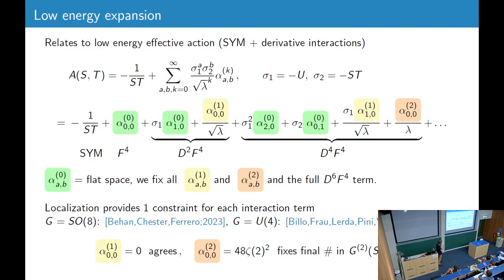Well, the alpha zeros are fixed by the flat space amplitude, and our result fixes also all the alpha ones and alpha twos. And combining with localization, we can also fix the full D^6 F^4 term. So localization provides one linear constraint for each of these interaction terms, and the computation has been done for SO(8) and U(4) just recently. There was a talk about this yesterday. And so we have here one check. The alpha one zero zero agrees with our computation. For this, the second one is not a check because we have to use this to fix the final coefficient in this second correction.